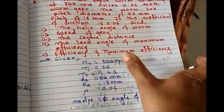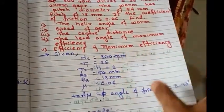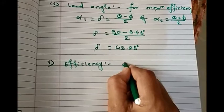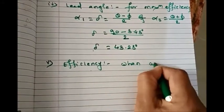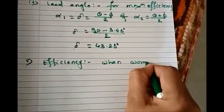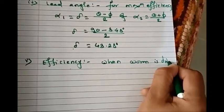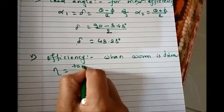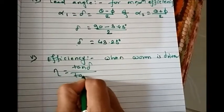Now number 5: efficiency and maximum efficiency. So efficiency when worm is driving, we know the formula: efficiency mu equals tan of delta divided by tan of theta plus phi.